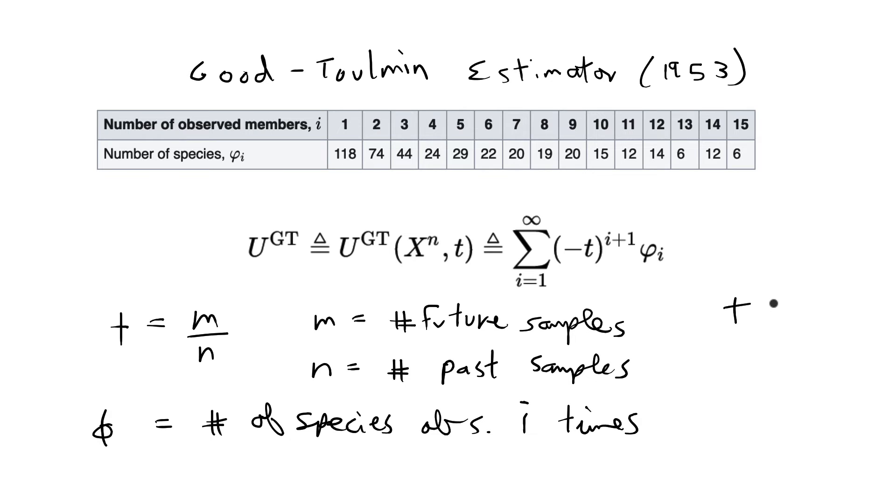So statisticians have found that the Good-Toulman estimator still works pretty well when t is less than or equal to 1. So basically you want the future number of samples to be less than or equal to the number of past samples. For cases where you want to sample even more than the data that you have, the sample size that you have, there are other estimators that people have come up with. But I'm going to use this one.